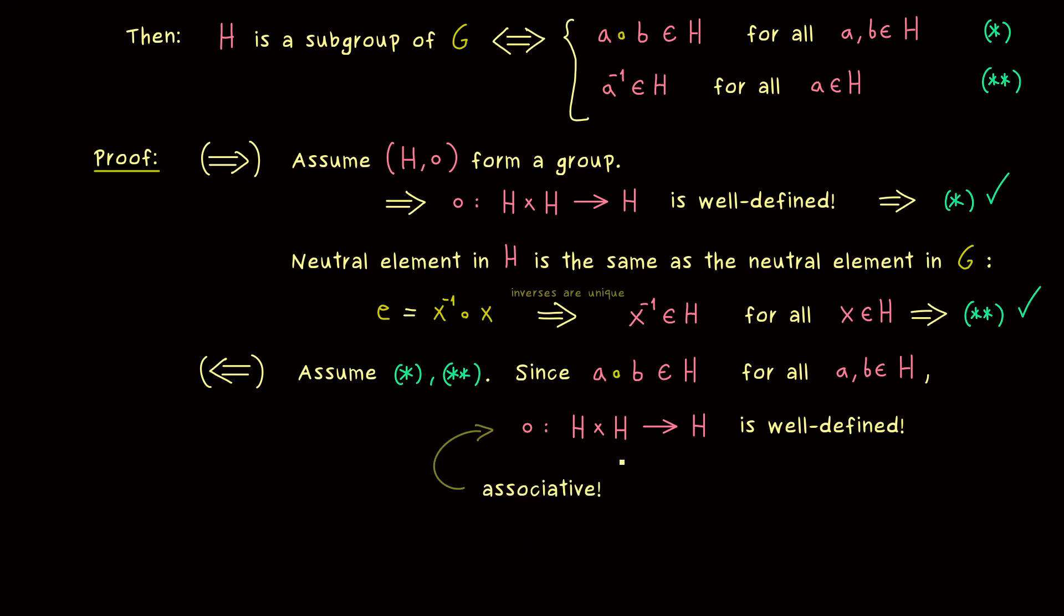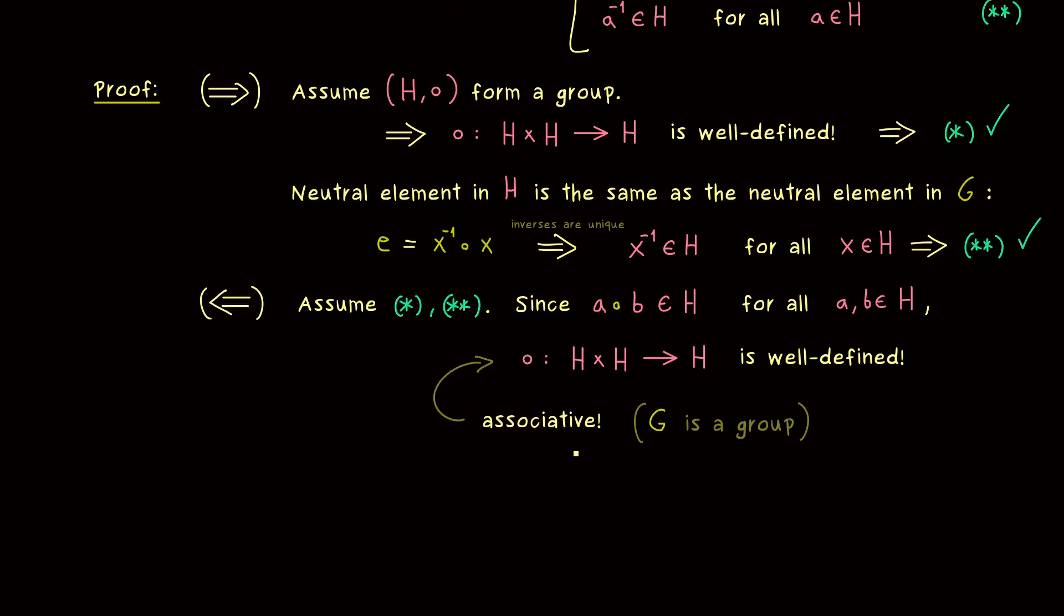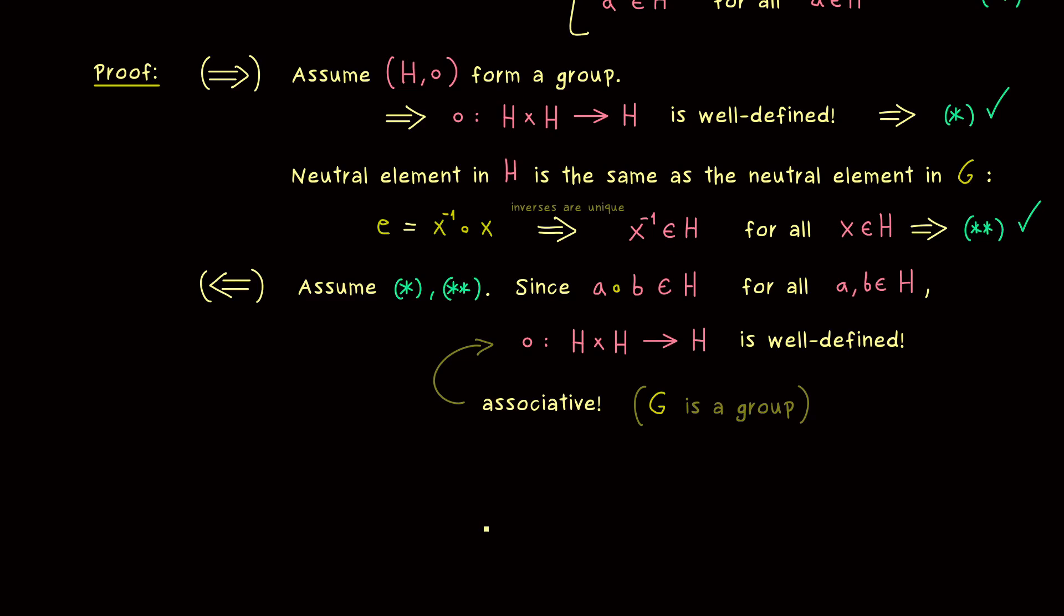Indeed, this is the next step. It's associative, because it was already associative on G. So if we restrict the binary operation to fewer elements, we will not change the associativity. In other words, we can already say that H with the binary operation is a semi-group. Therefore we only need to show that we have a neutral element and all the inverses inside H.